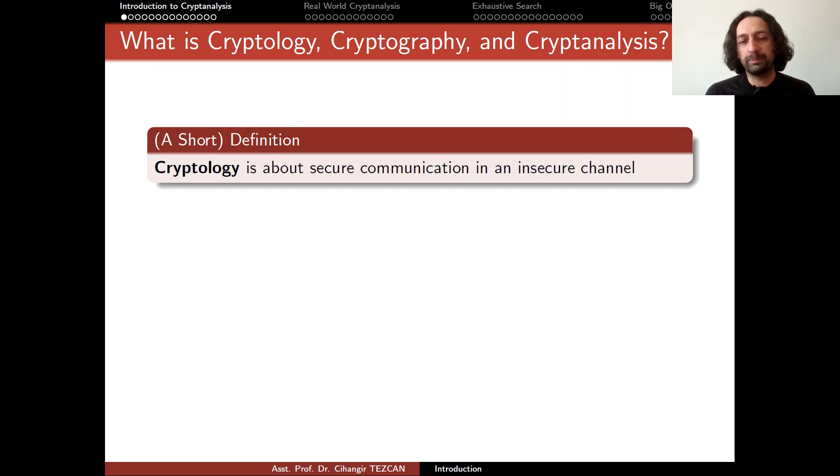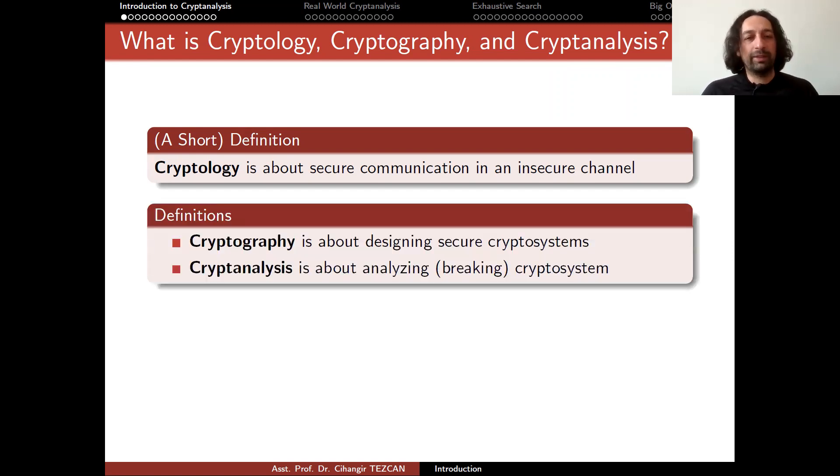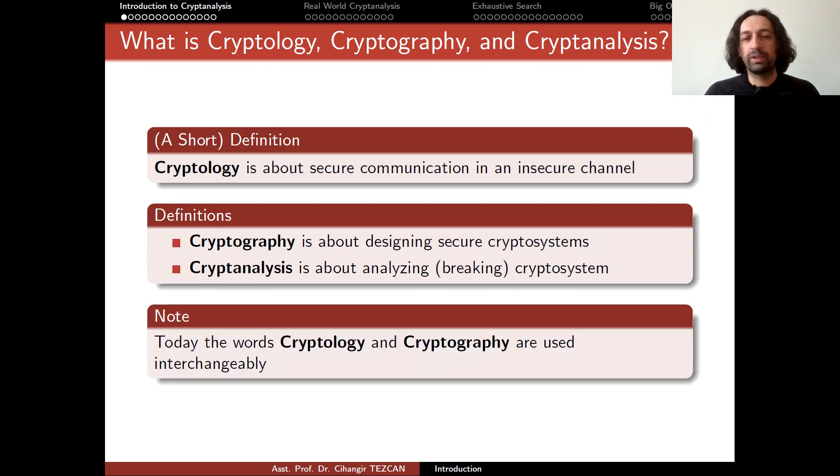Of course, this definition is not enough, because cryptology also solves a lot of other problems too. So then what is cryptography? Cryptography is about designing secure cryptosystems. And cryptanalysis is about analyzing or breaking the cryptosystem. So these are actually related areas, because in order to design something good, you have to know how to break them. And this is why this course is about cryptanalysis. The initial definitions of cryptography and cryptology were different, but nowadays they are used interchangeably.